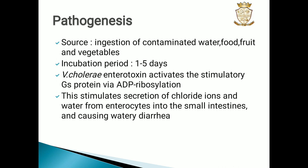Vibrio cholerae can be ingested through contaminated water, food, fruit, or vegetables. The incubation period is 1 to 5 days. Vibrio cholerae endotoxin activates the stimulatory Gs protein via ADP ribosylation, which stimulates secretion of chloride ions and water from enterocytes into the small intestines, causing watery diarrhea.